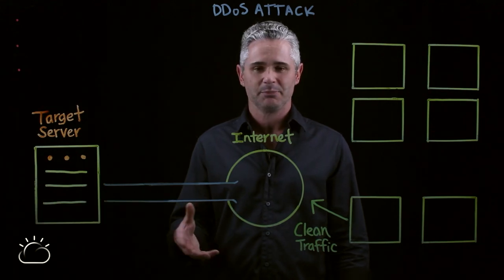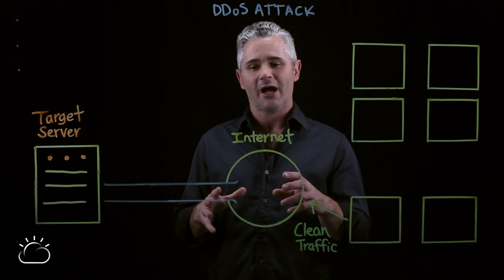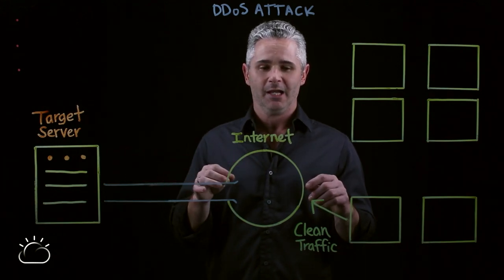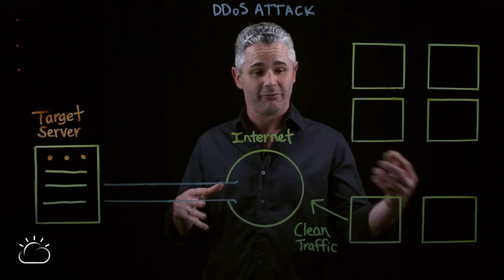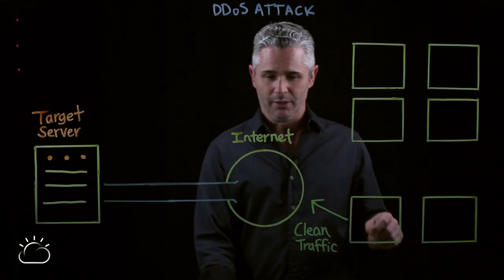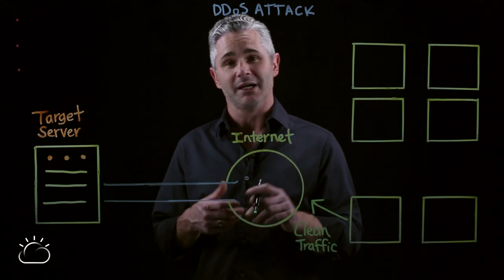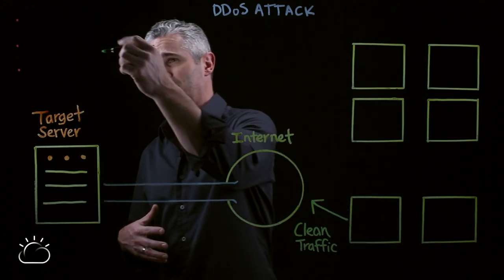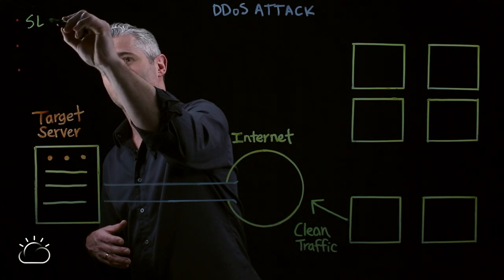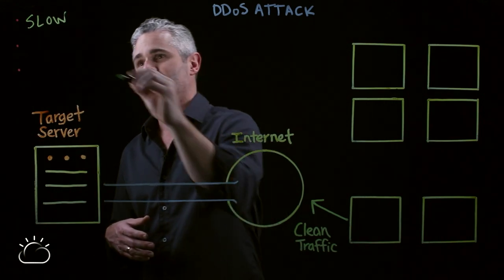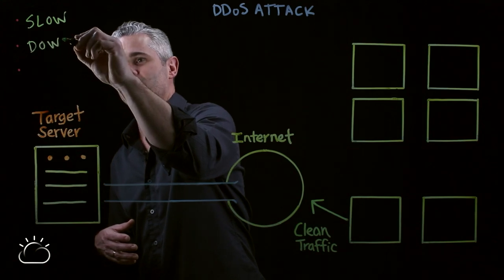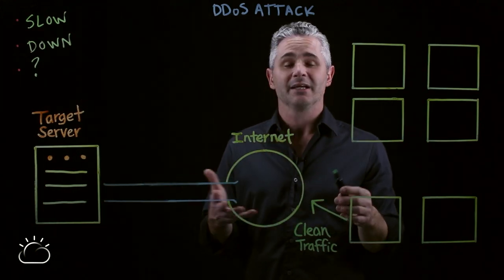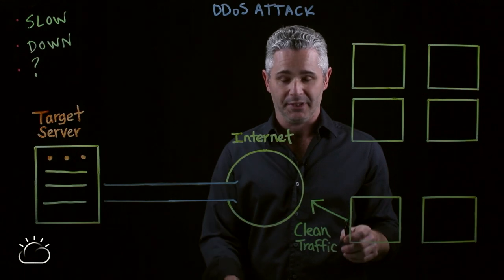A DDoS attack is an attempt by an attacker to create so much traffic or congestion to a target application or an internet application that it impedes the traffic flow for normal visitors. Normal visitors or the owner of the application might see a drastic reduction in speed, a complete outage, or just some unexplained consequences that they don't normally see within their day-to-day operations.